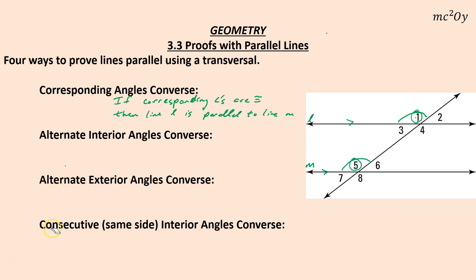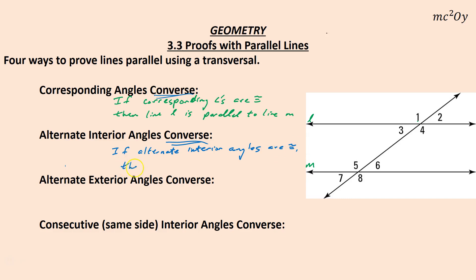Now we can use that for a couple different things. Rather than corresponding angles congruent, let's say we have alternate interior angles. The alternate interior angles converse says if alternate interior angles are congruent, then line L is parallel to line M. So if angle 5 is congruent to angle 4, then that tells us line L is parallel to line M.